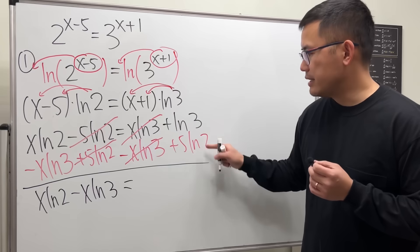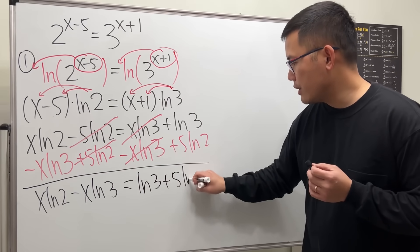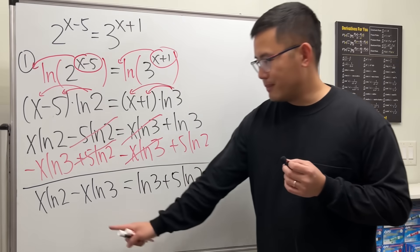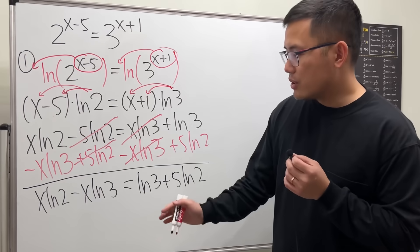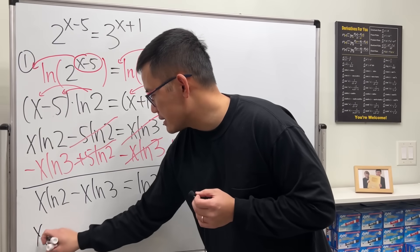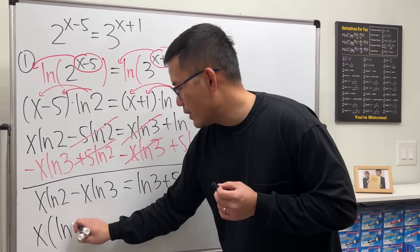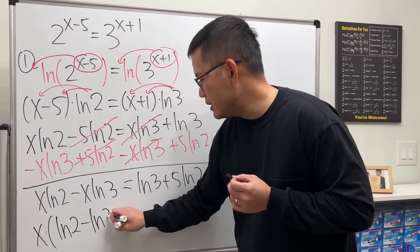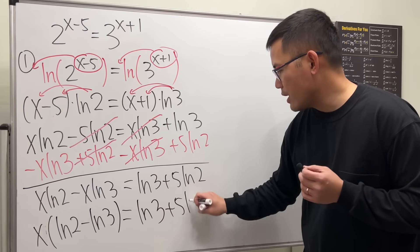That's equal to ln 3 plus 5 ln 2. Now we have x and x here. We can factor that out. So I'm going to write it down as x times ln 2 minus ln 3. That's equal to ln 3 plus 5 ln 2.